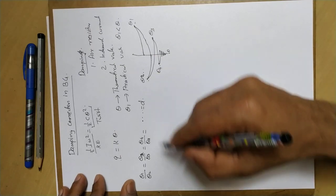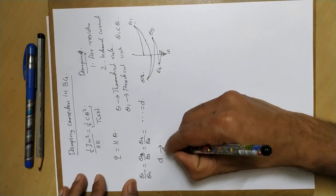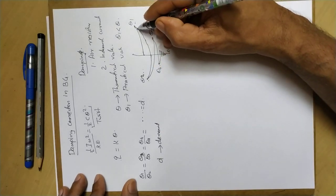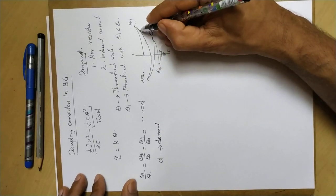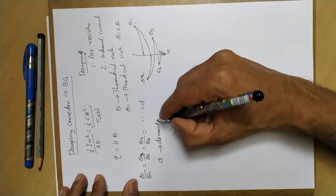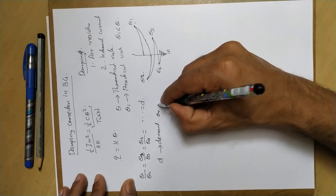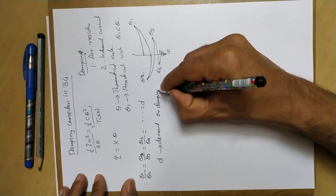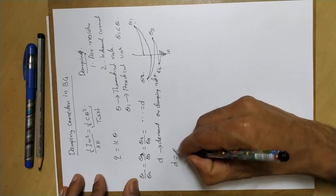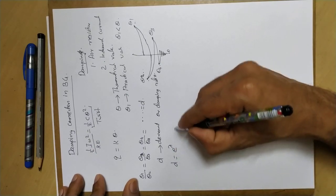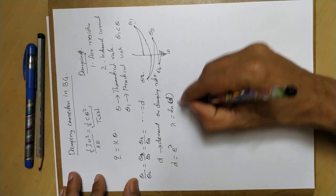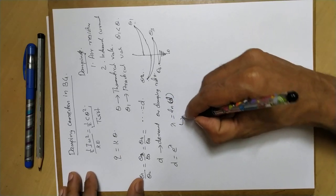It is observed that the ratio theta1 by theta2 equals theta2 by theta3, which equals theta3 by theta4, and so on — equal to a constant D. This constant D is called the decrement or damping ratio. We let D equal to e raised to lambda, so that lambda equals log D, where lambda is called the logarithmic decrement.